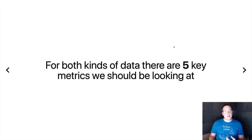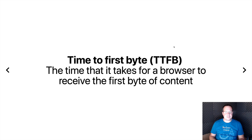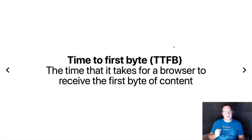For both these kinds of data there are five key metrics we should be looking at. The first is time to first byte — the time it takes from when your user's browser makes a request to your server and for your server to return that first byte. From a user point of view you don't want them waiting long. This is the part you have the biggest control over because you have the power to affect how long it takes to render your page.